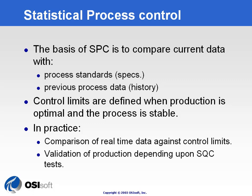Let's get to the definition of statistical process control and how to apply it. Basically, what you want to do is compare current data against control limits. These control limits are derived from process standards — specifications from design data, or previous process data from the history of the process. Whenever you had a good production rate, good quality, and sustainable production, that could be where you define your control limits for your SPC chart.